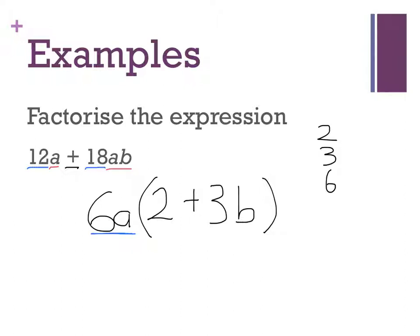Now how can I check if it's correct? Well, I can do the opposite because factorizing is the opposite of expanding. I can try expanding. Do my eyebrows. 6a times 2. 6 times 2 is 12a.